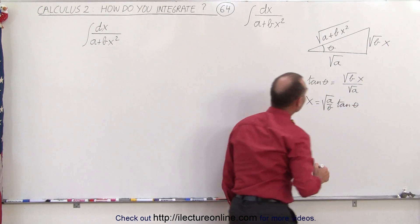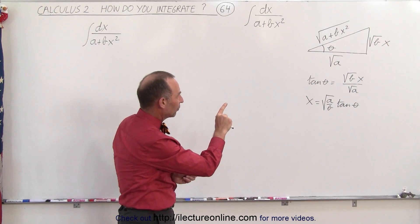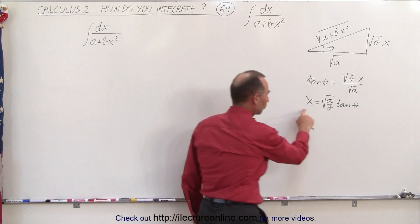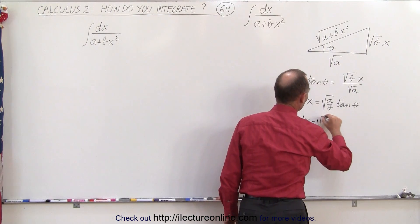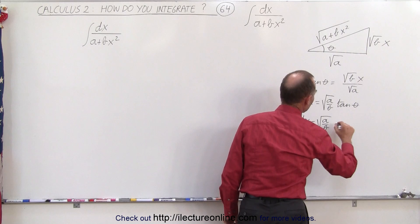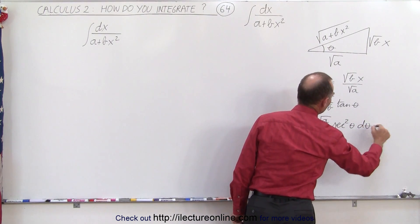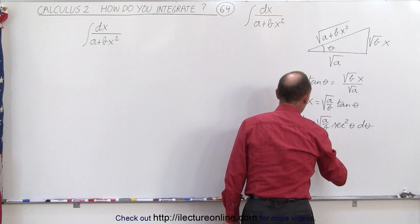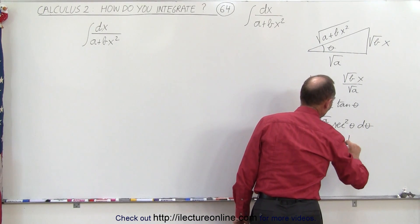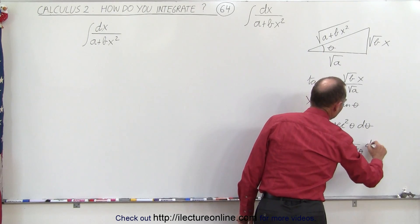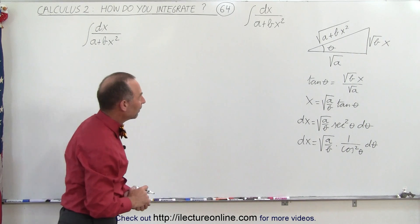And since we have a dx in the numerator, we're going to take the differential of both sides. We can say that dx is equal to the square root of a over b times the secant squared of theta d theta. Or we can write it as dx equal to the square root of a over b times 1 over the cosine squared of theta d theta, depending on which form will help us integrate better.